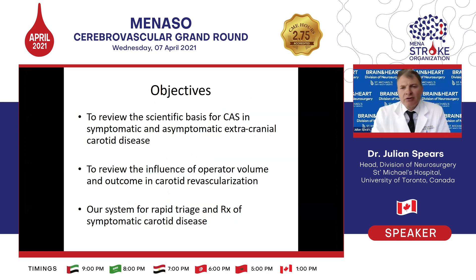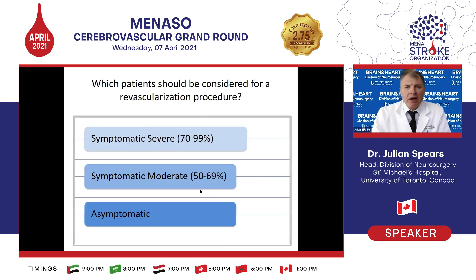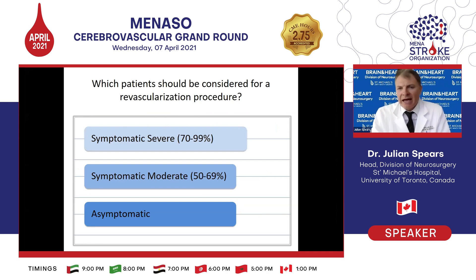The objectives are to review the scientific basis for the use of angioplasty and stenting for symptomatic and asymptomatic carotid disease, to review the influence of operator volume on overall outcome, and how we manage our carotid patients. The primary indications for revascularization fall into three broad categories: symptomatic severe extracranial carotid disease, symptomatic moderate, and asymptomatic disease, which is much more controversial with the advent of modern medical therapy.